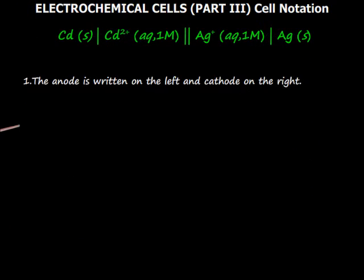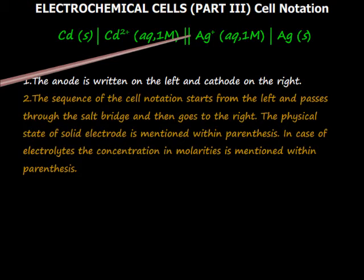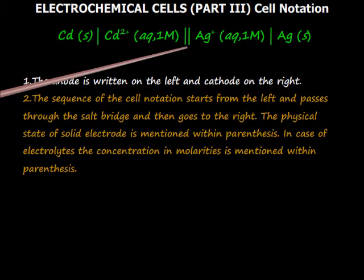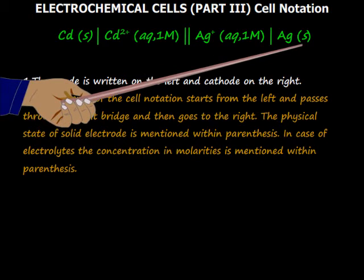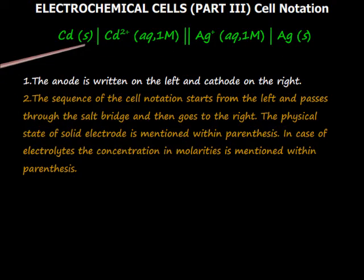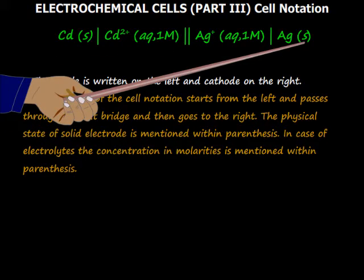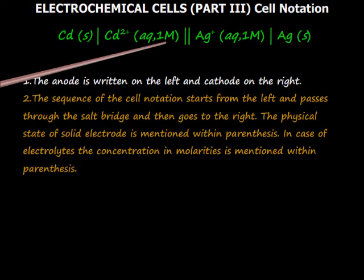There are some important points to note. The anode is written on the left and the cathode on the right. The sequence of the cell notation starts from the left and passes through the salt bridge and then goes to the right. The physical state of the solid electrode is mentioned within parenthesis. In case of electrolytes, the concentration in molarities is mentioned within parenthesis.